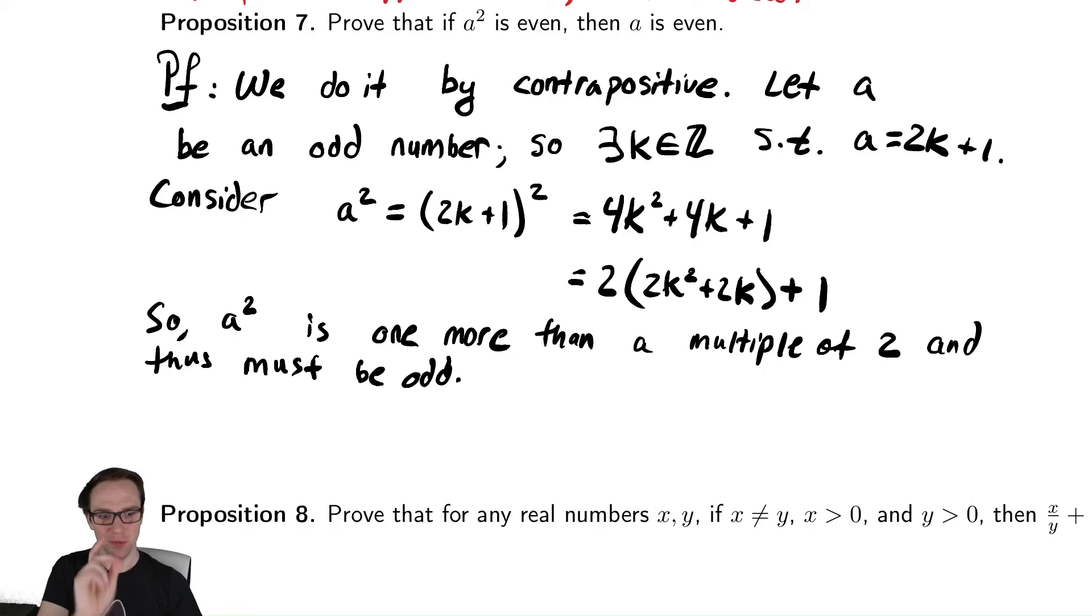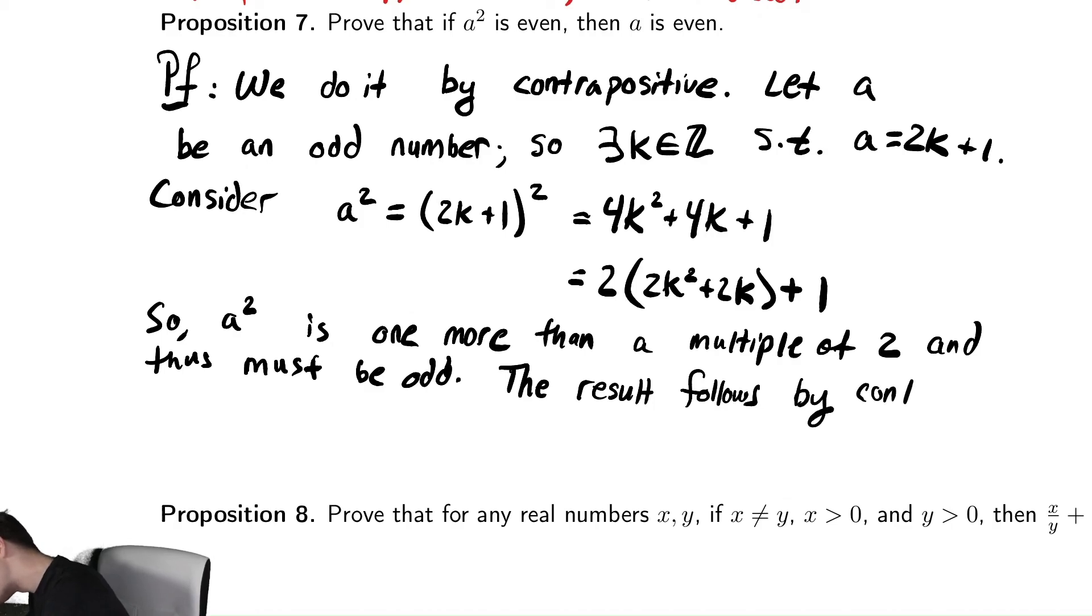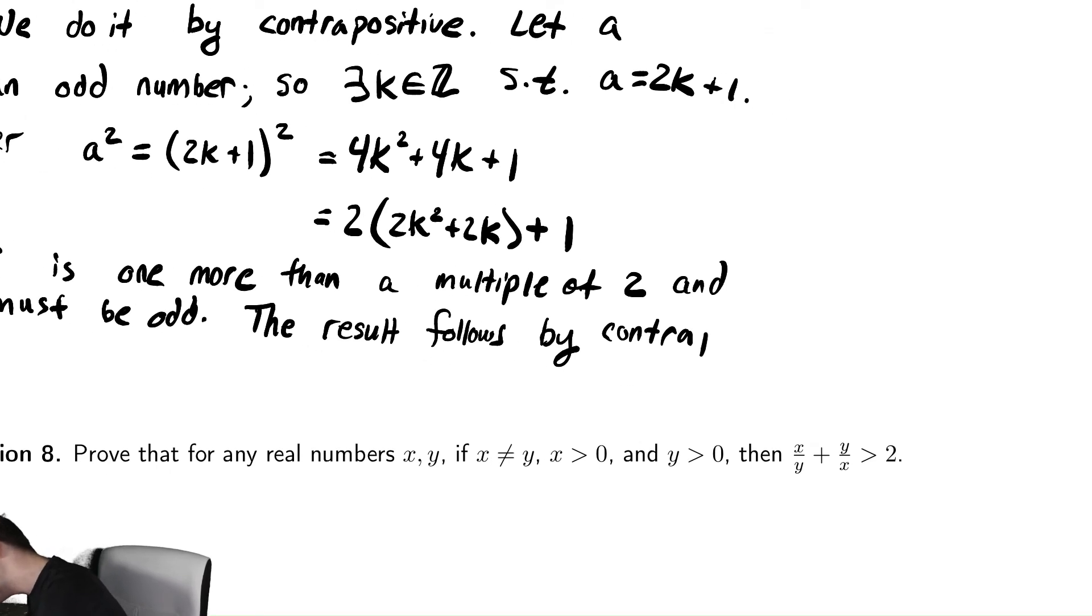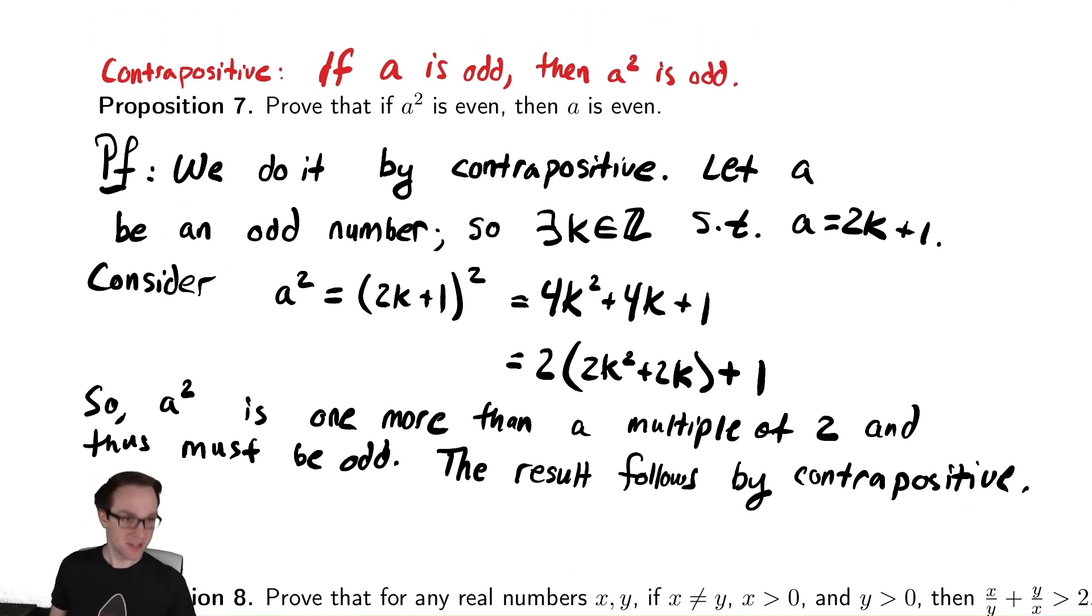Notice we're not done with the original statement. We've proven the contrapositive. We still want to inform the reader that the result must be true. So I'm just going to remind them at the end, the result follows by contrapositive, or some other basic comment to let the reader know that this isn't quite what you asked for, but it gets us the result that you wanted. So I've proven it by contrapositive here because it wasn't obvious how to prove it otherwise. And when I've done that, I still want to remind the reader as many times as necessary that it was done by contrapositive so that they understand why the thing that we did here proves what they originally asked for.